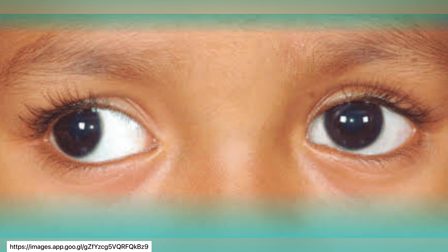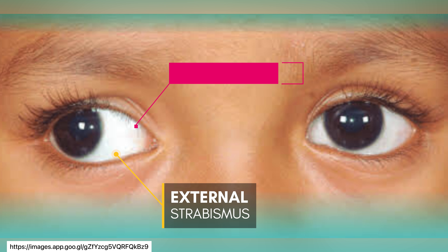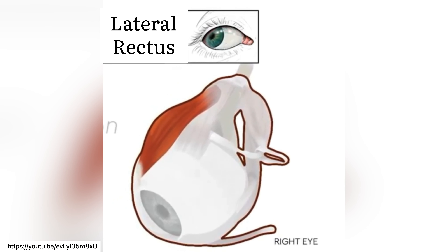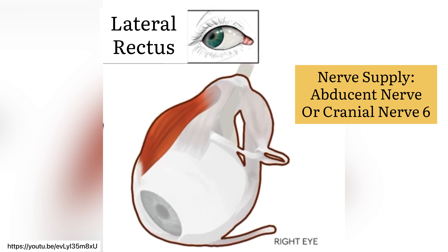The medial rectus rotates the eyeball so that the cornea looks medially. It is similarly supplied by the oculomotor nerve and has the following origin and insertion. And remember, when you are asked about which muscle is affected in external strabismus, the answer is medial rectus because it can no longer oppose the action of lateral rectus.